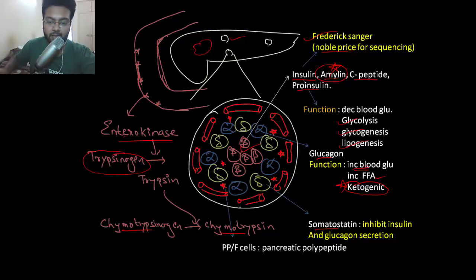Next are the star cells. These are also called F cells or PP cells which release pancreatic polypeptide.